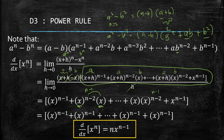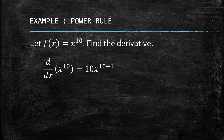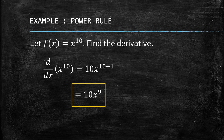So the differentiation rule is confirmed: the derivative of x^n is n times x^(n−1). For example, if f(x) = x^10, instead of using the limit definition — which would take a long time — we simply bring the 10 down as the coefficient and subtract 1 from the exponent, giving us 10 times x to the power of 9. If you want to verify using the limit definition, it will give you the same answer. That's all, we'll see you next time.